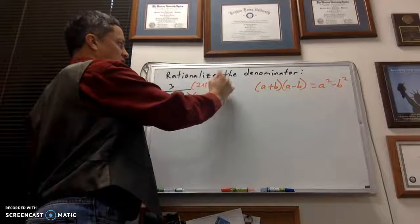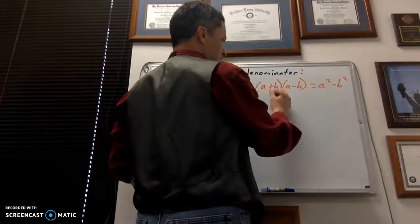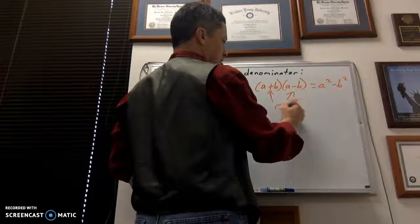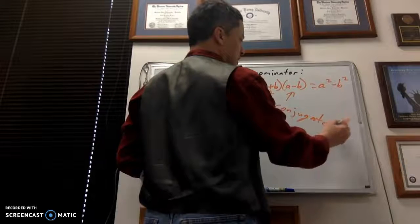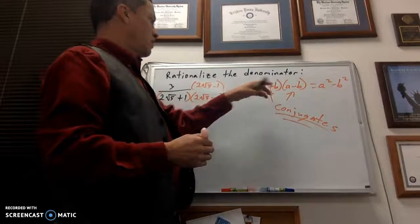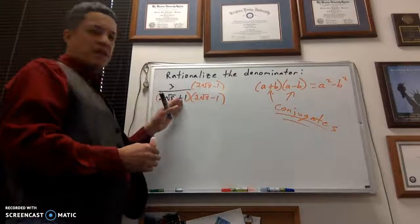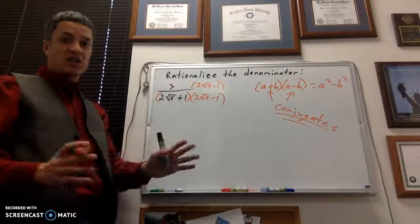And a conjugate, these guys are actually conjugates of each other. What a conjugate is, is basically, if you have a plus b, like I do here, its conjugate is going to be a minus b. So just change the middle sign. That's all you do.